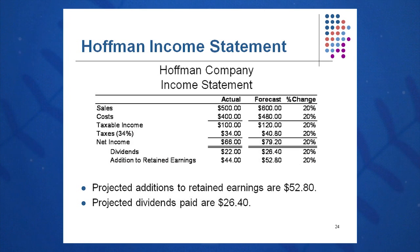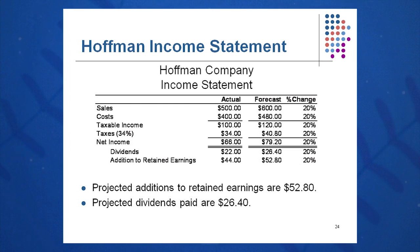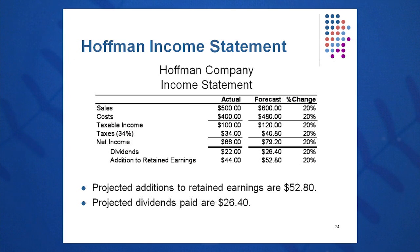Similar to Rosengarten, Huffman Company management is also going to keep two-thirds of their net income and give away one-third. So the dividend will be one-third of net income, and additions to retained earnings will be two-thirds. In the forecast year, keep two-thirds, give away one-third. One-third of $79.20 gives dividends of $26.40, and two-thirds gives $52.80 as additions to retained earnings. Circle that number — it's the only number needed off this sheet. We bring it to the balance sheet and add it to the retained earnings account.